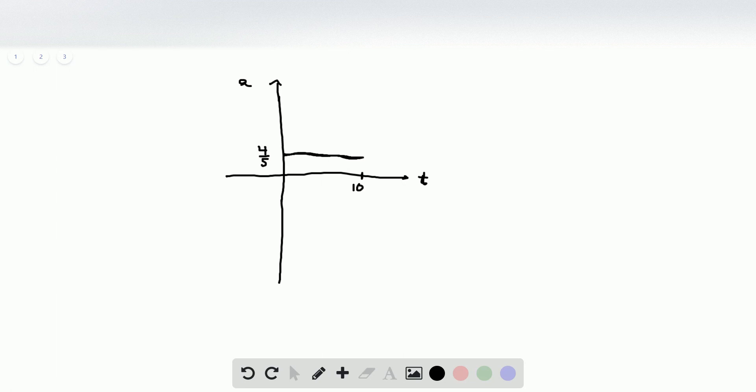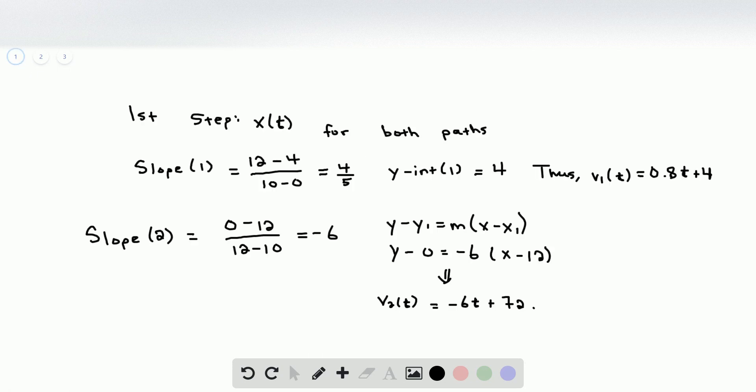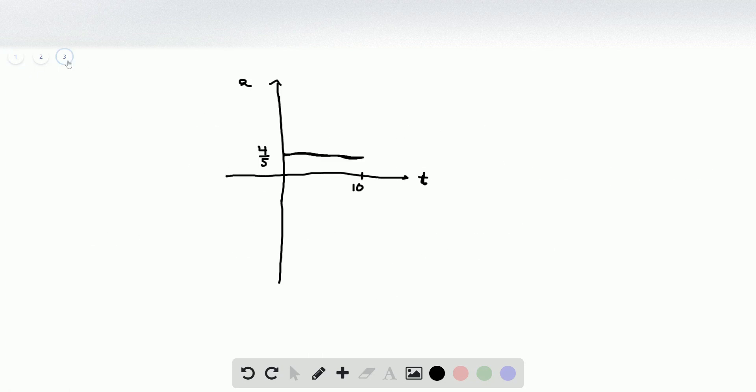At this point, the object turns around and moves back the other way. The slope of the second part is negative 6. And so we know the acceleration must be negative 6. So I'm going to go way down here. So let's say that's negative 6. Then from 10 to 12, it'll be a solid line just like that until we get to 12.